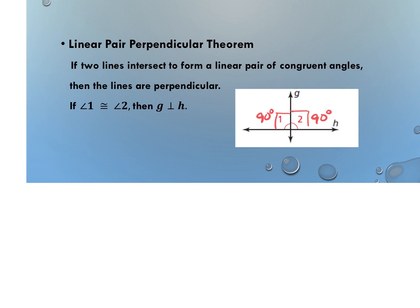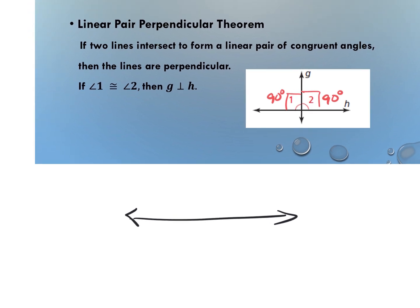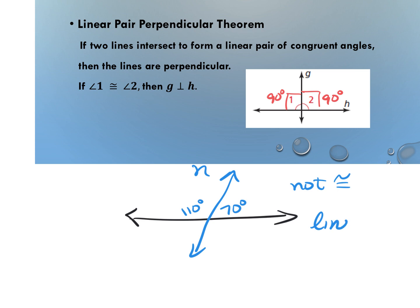A linear pair doesn't automatically mean perpendicular — the angles also have to be congruent. For example, a line could create angles of 110° and 70°: they're still supplementary, but not congruent. As soon as the two angles are not congruent, line N is not perpendicular.